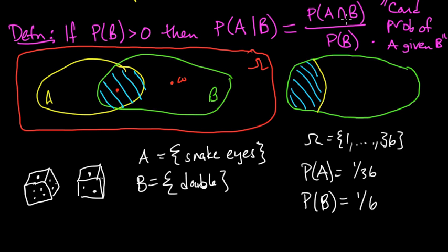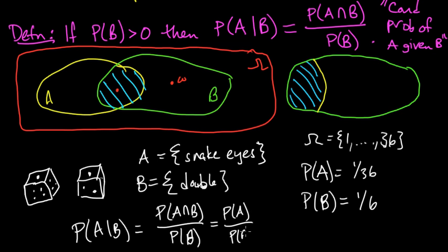So what's the conditional probability? Well, we need A intersect B. And since snake eyes is a special case of a double, A intersect B is just A. So the conditional probability of A given B equals the probability of A intersect B, which equals the probability of A, and that's just 1/36th divided by 1/6th.